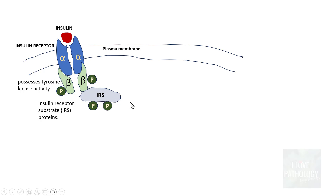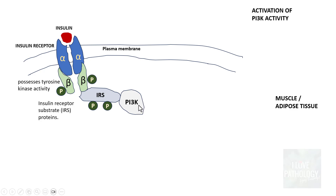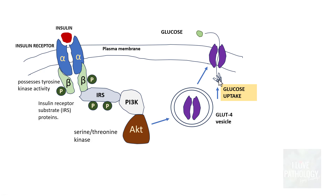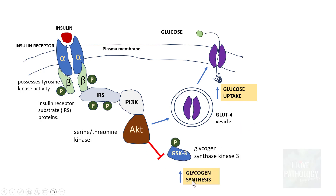There is phosphorylation of these IRS proteins, which in turn activates the PI3K pathway — phosphatidylinositol 3-kinase — which finally activates serine/threonine kinase proteins. This results in the recruitment of GLUT4, which helps in glucose uptake. Normally GLUT4 is found within the cell. Because of the action of AKT, GLUT4 is recruited onto the plasma membrane where it facilitates glucose uptake. In the earlier phase we studied insulin-independent glucose uptake; whereas this is insulin-dependent — because of insulin there is expression of GLUT4 channels, and glucose is taken up into the cell.